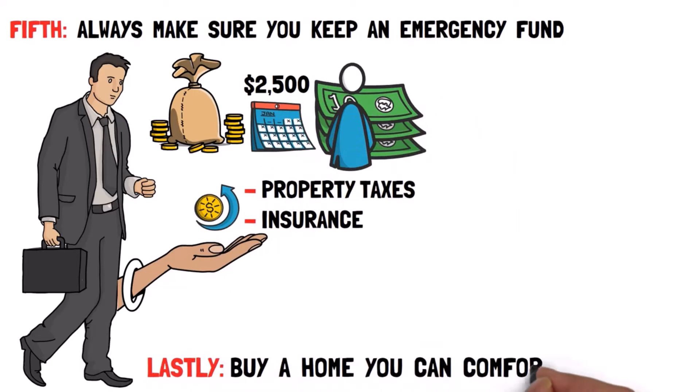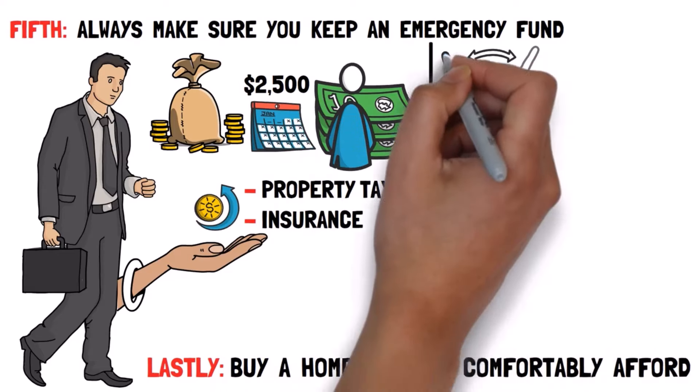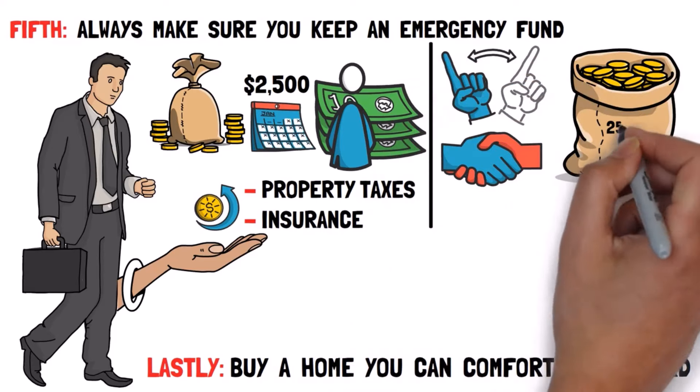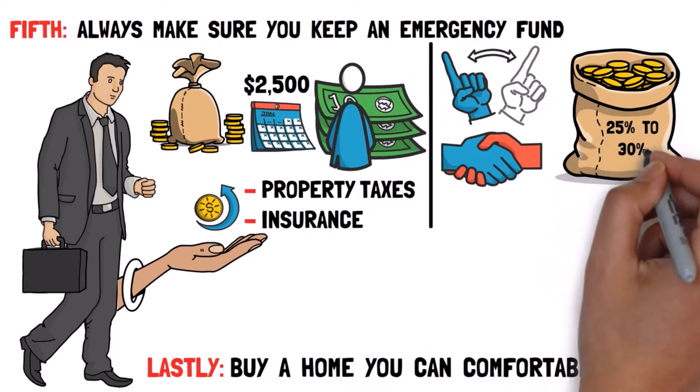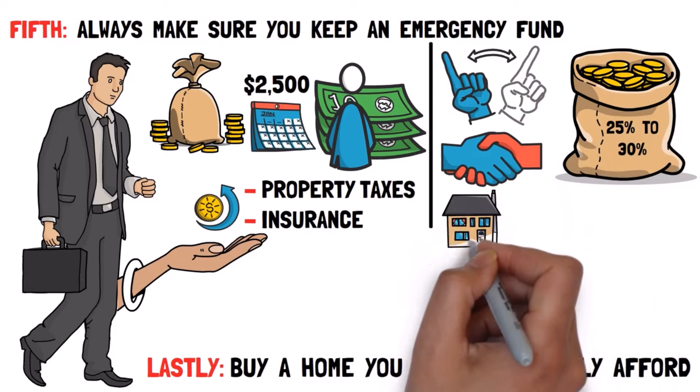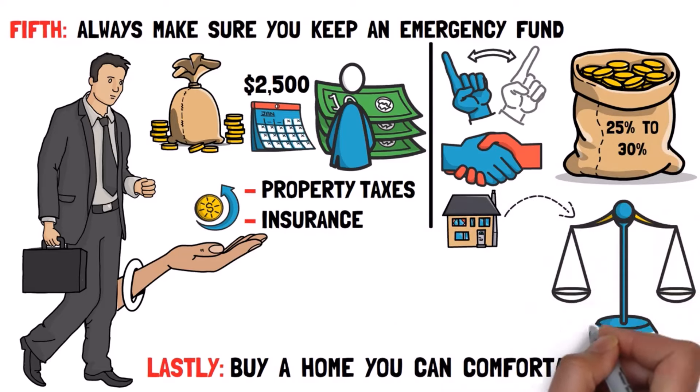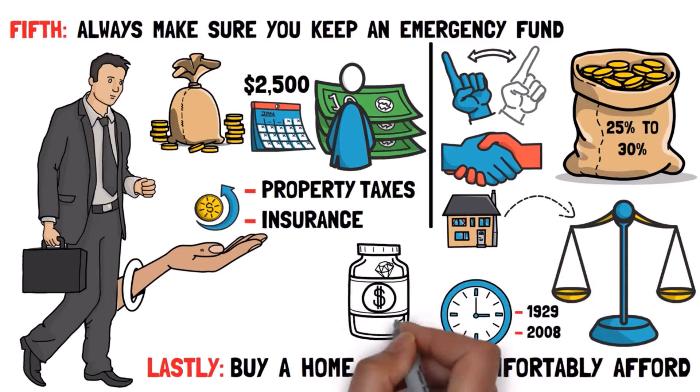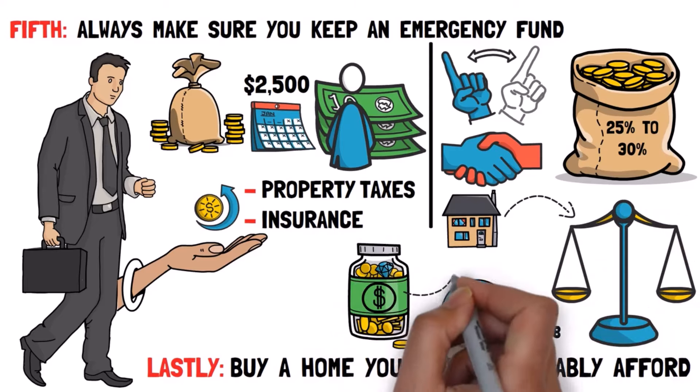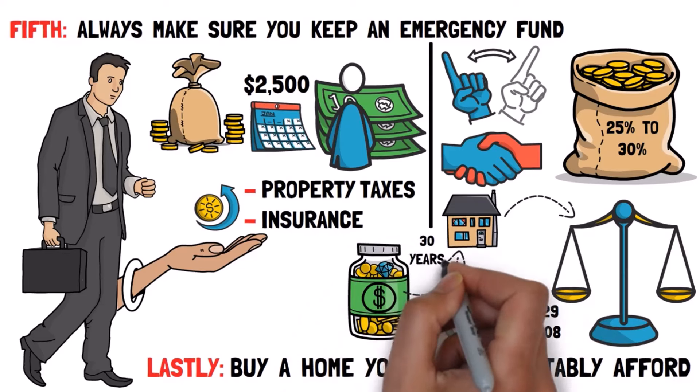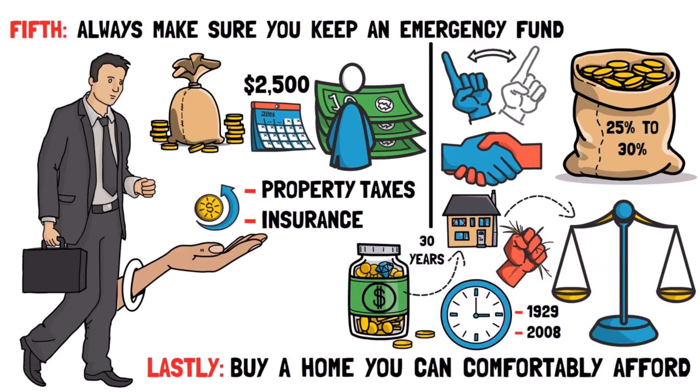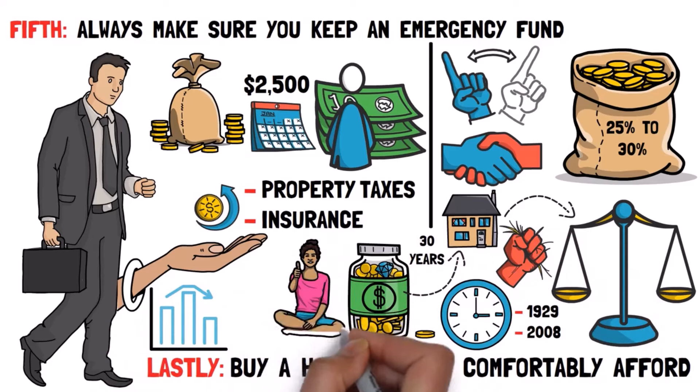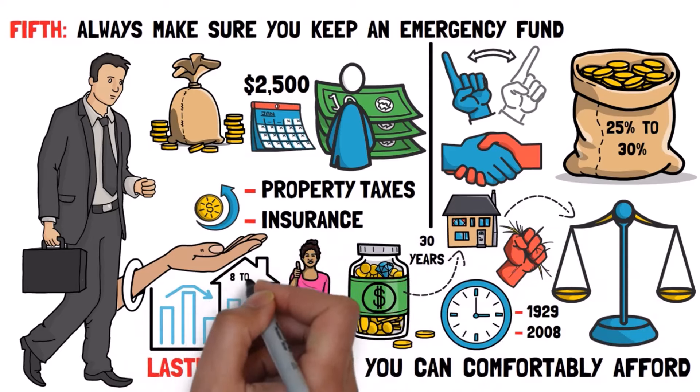Lastly, buy a home you can comfortably afford. Don't stretch your budget. Aim for a housing payment that's a maximum of 25% to 30% of your income or less. In short, real estate has generally been a stable investment, with a few exceptions, like 1929 and 2008. Buy a house you can afford with a fixed-rate mortgage, ideally for 30 years, and plan to hold it for a long time. While short-term price fluctuations may happen, they shouldn't be a big concern if you intend to keep the property for 8 to 10 years.